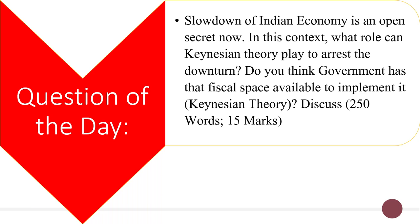You might have come across various types of data, official as well as from independent agencies, which show that the Indian economy is currently facing a slowdown. In this context, you have to analyze what role Keynesian theory can play to arrest the downturn, and whether the fiscal space is available for the government to implement it. The word limit is 250 and the maximum marks are 15.